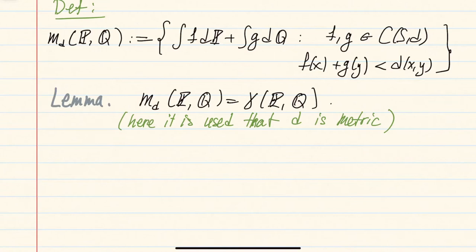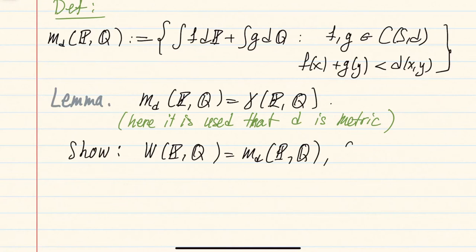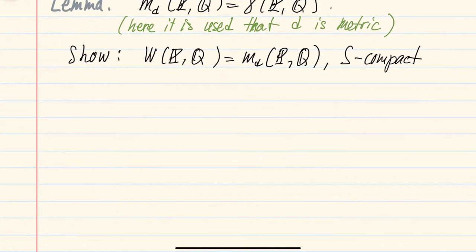To prove the Kantorovich-Rubinstein theorem on a compact space — that W equals M_d — we use a beautiful application of the Hahn-Banach theorem. There are many formulations; in this case we need the following form.